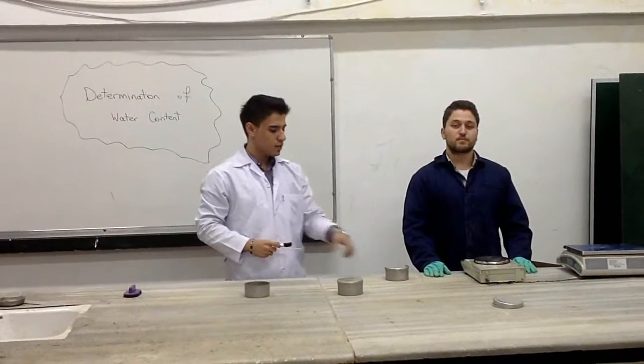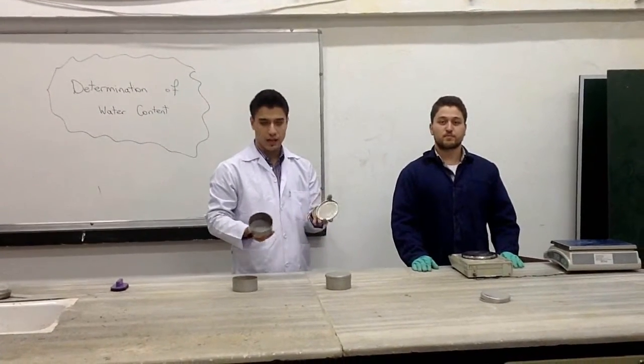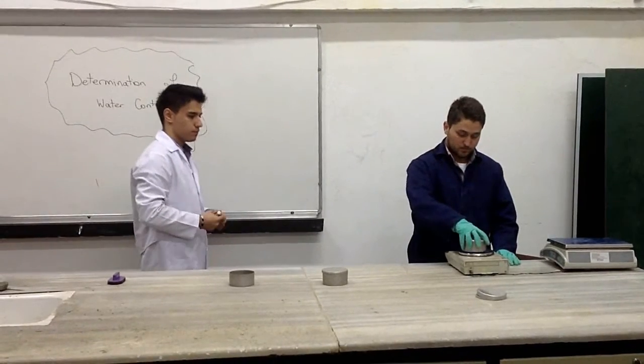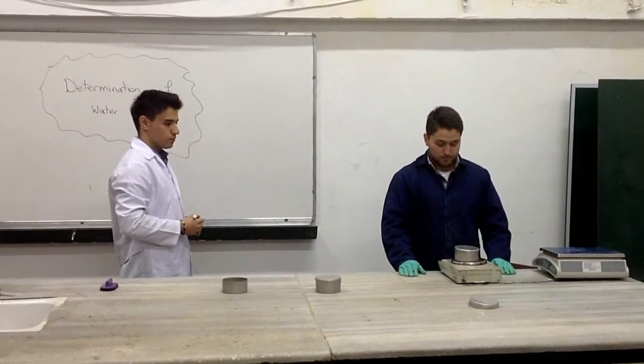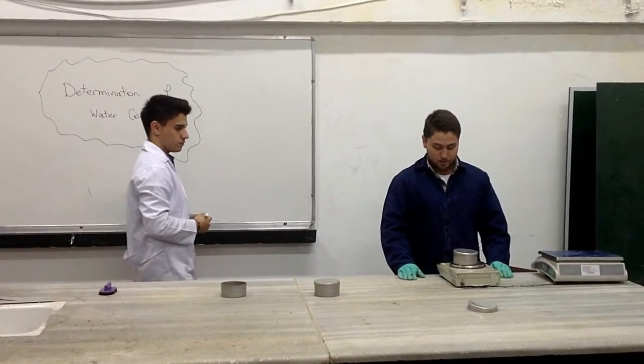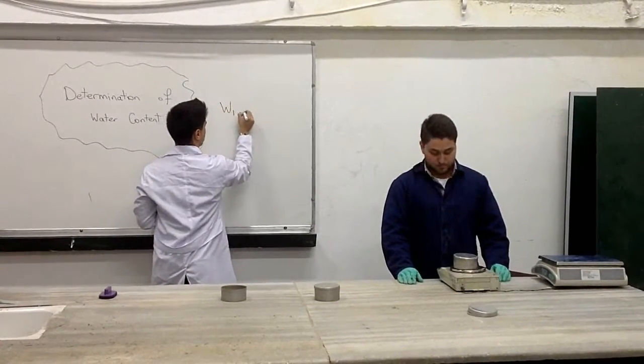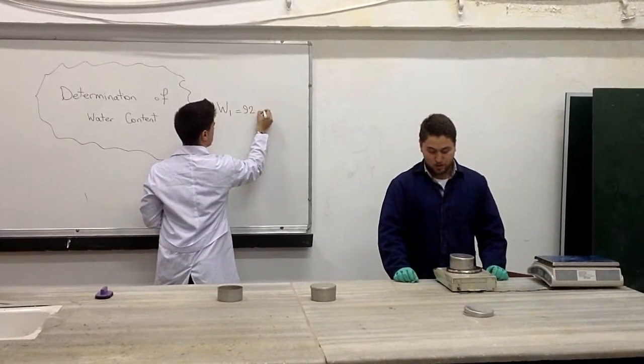So the first step is to determine the mass of the empty moisture can with its cap. It is 92.03 grams. So our first weight will give 92.03 grams.